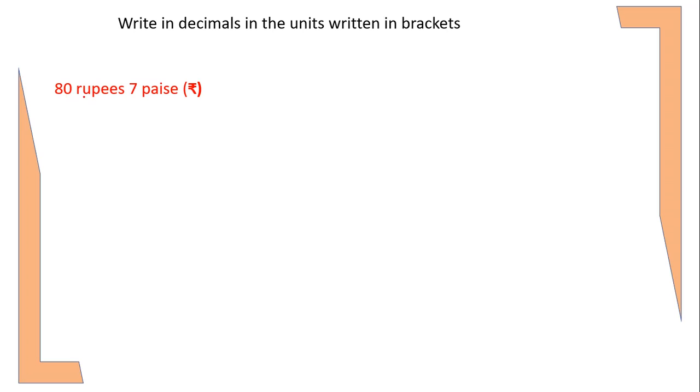there are two units - one is rupees, another one is paise. We have to write these two units in a single unit, that is rupee. To write that, first we will write the higher unit as it is. Rupees 80, I wrote as it is. Then I will convert the lower unit to the higher unit.